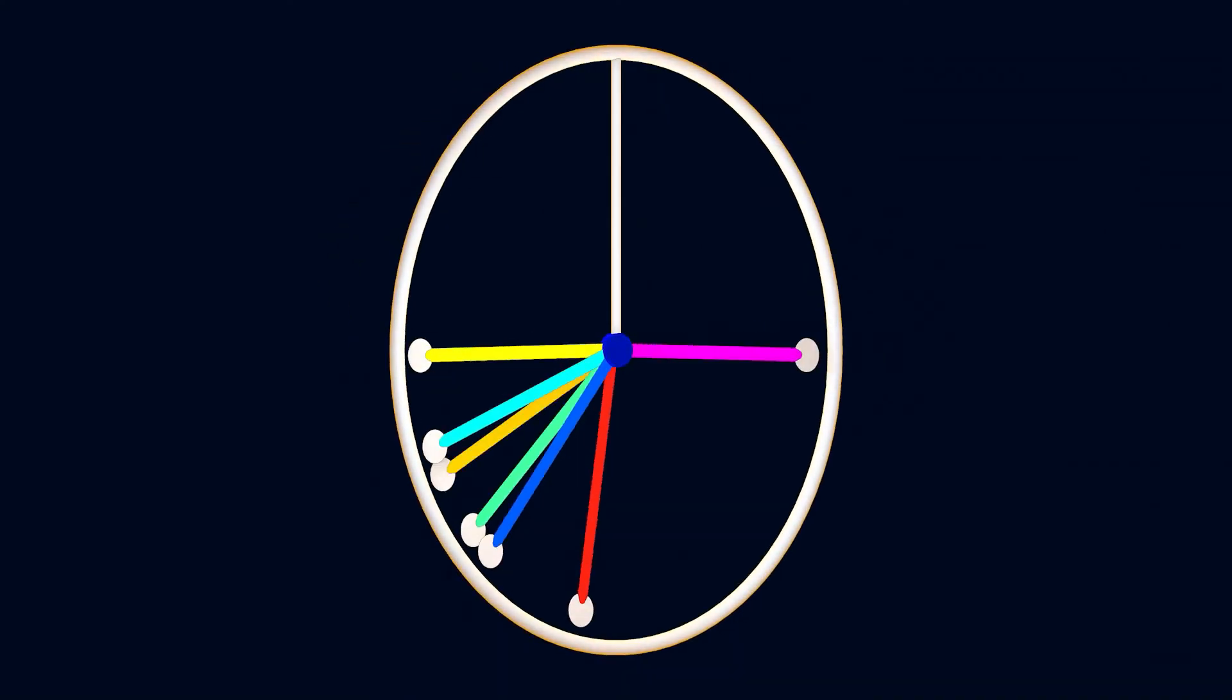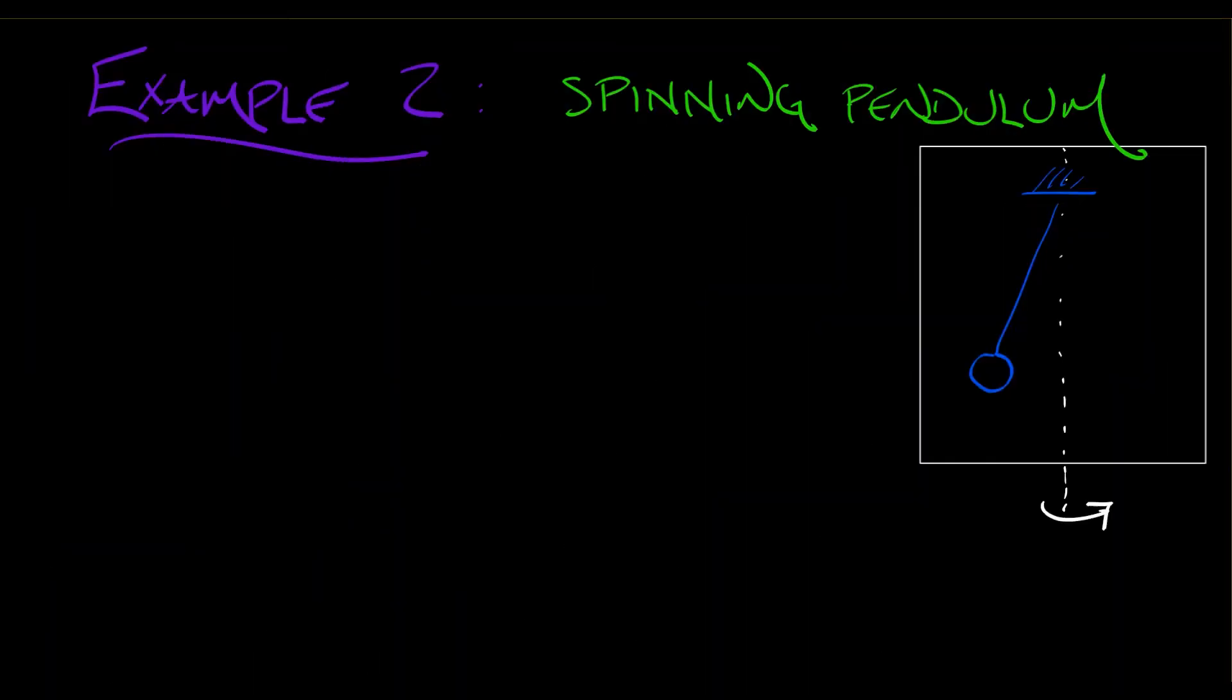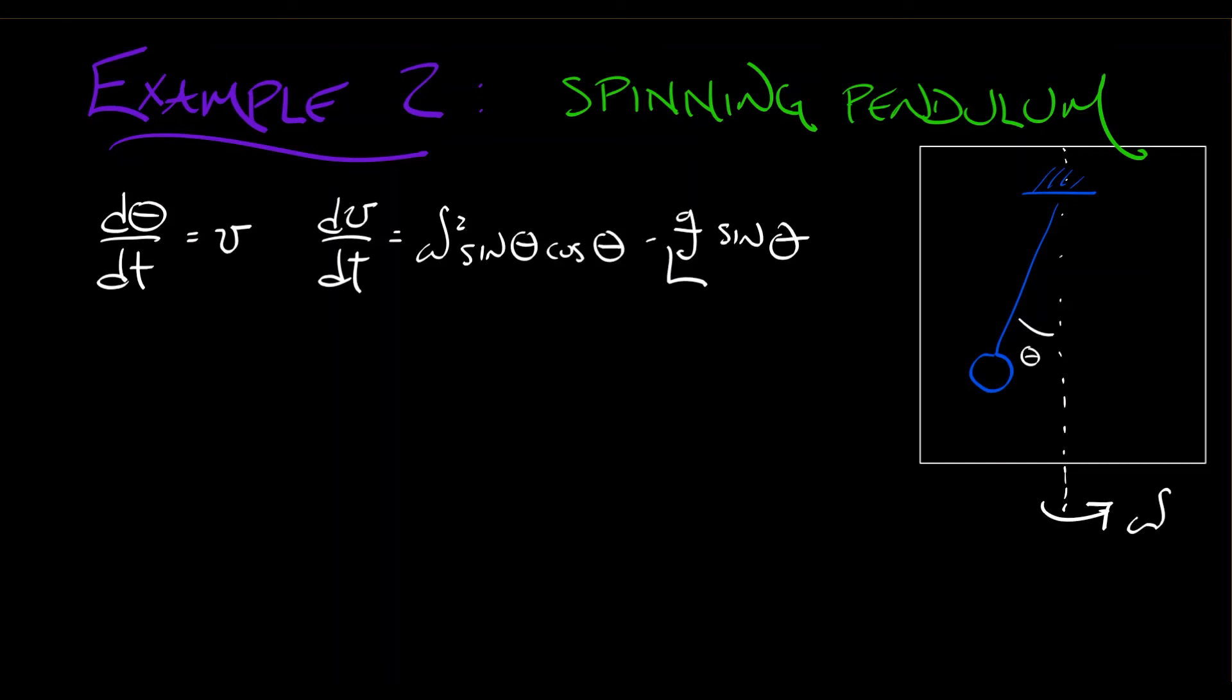That was given by the first order system d theta/dt equals v and dv/dt equals omega squared sine theta cosine theta minus g over l sine theta. Recall that this had equilibria at (0, 0), that's where the pendulum is at the bottom, and then at plus or minus pi, 0, that's really the same point, that's where the pendulum is at the top.